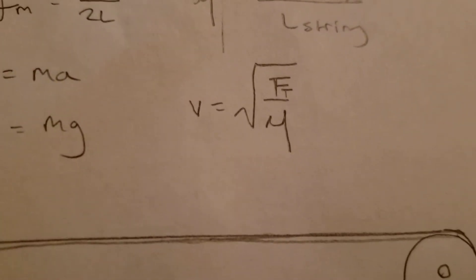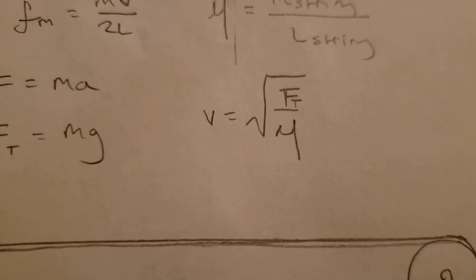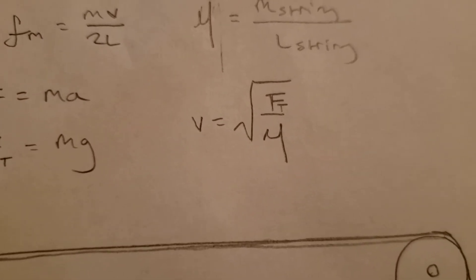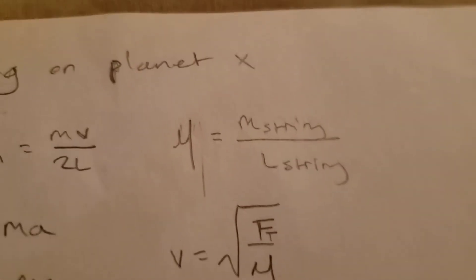So, we know that velocity of the waves is equal to the square root of tension over mass per unit length, and we know mass per unit length can be broken down into the mass of the string over the length of the string.